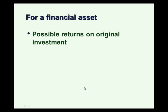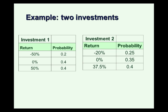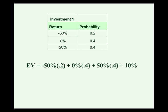For a financial asset, the possible returns on the original investment are these possible outcomes. Let's look at an example with two investments. Investments 1 and 2 have three possible returns with probabilities attached to them. For investment 1, a negative 50% return has a probability of 0.2, a 0% return has a probability of 0.4, and a 50% return also has a probability of 0.4. When we do the arithmetic, we get an expected return of 10%. Notice that 10% isn't really a choice — it's not what can happen — but year after year, if we drew this investment over and over, we would expect the overall return to converge to 10%.